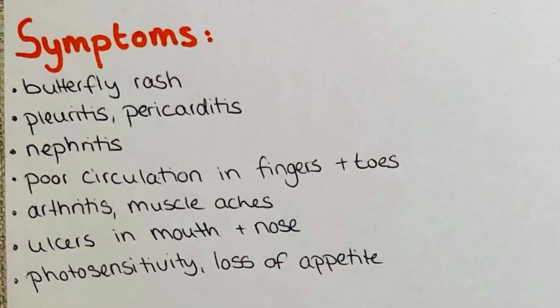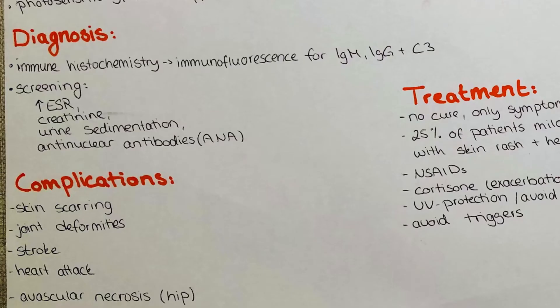The most well-known symptom is the characteristic red butterfly rash over nose and cheeks of the patient's face. But there are more symptoms you should know for your exam. Those are pleuritis and pericarditis, nephritis, poor circulation in fingers and toes, as well as arthritis, muscle aches, ulcers in mouth and nose, and photosensitivity and loss of appetite. So as you can see, systemic lupus involves far more than the skin of the face.